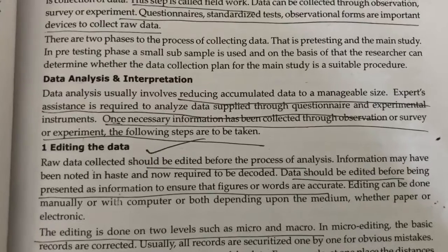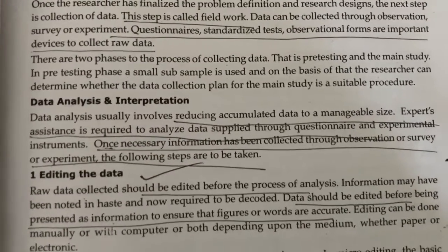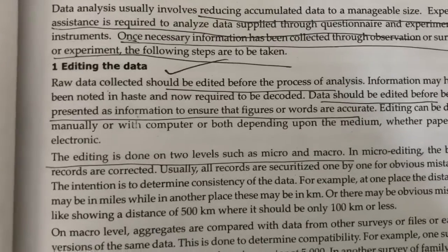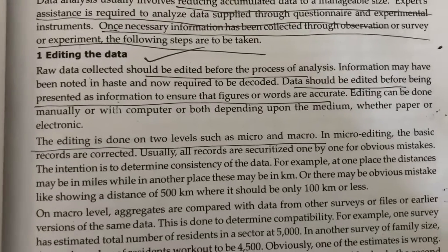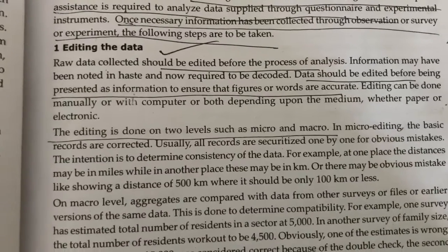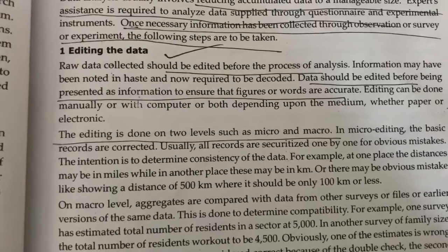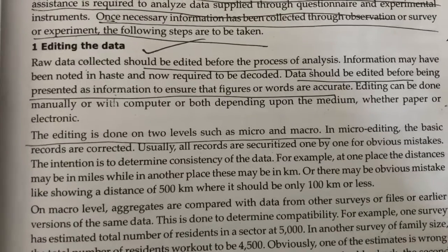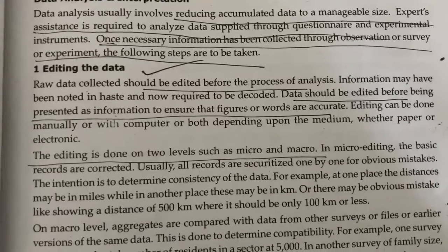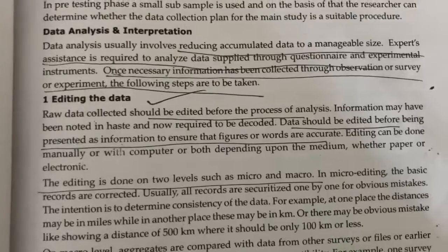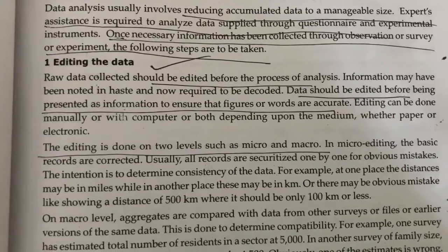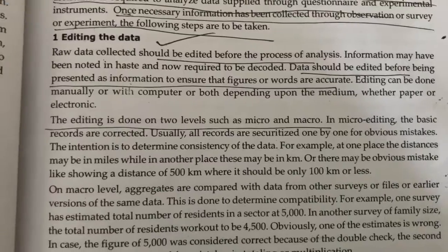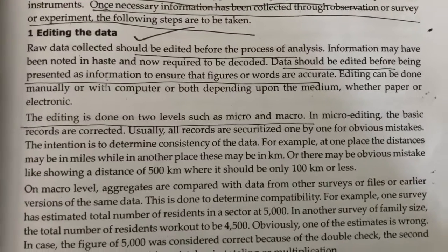Once the necessary information has been collected through observation, survey, or experiment, we edit the data. The raw data should be edited before being presented as information to ensure that the figures are accurate. Editing can be done manually or with the computer, or both, depending on the medium — whether paper or electronic. Editing can be done at two levels: micro level and macro level.